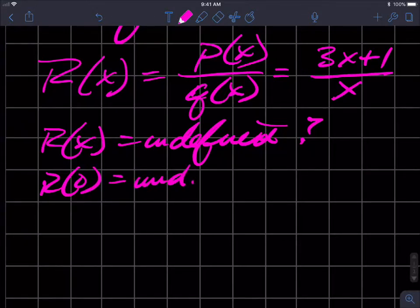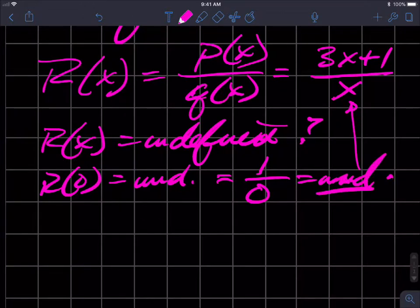Why? Because if I put zero into that x, I'll get zero plus one, which is one, divided by zero. So R of zero in this particular function is one over zero, which is undefined. I don't know what it means to divide by zero, so it's undefined. I cannot plot any points.